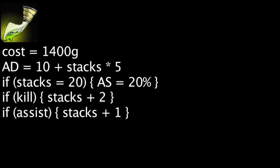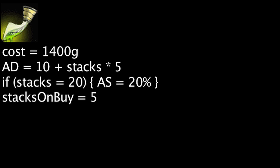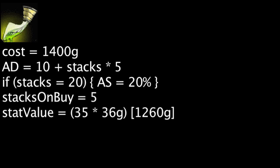Two stacks are gained on a kill, one stack is gained on an assist, and half the current stacks are removed on death, with the amount removed rounding down to the nearest integer. The item will also now start with 5 stacks initially, meaning one wastes 140 gold on stats when first purchasing this item.